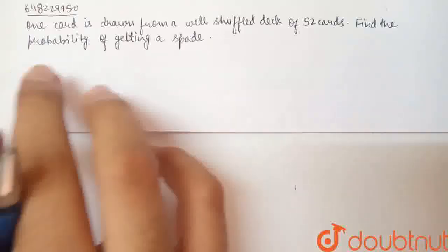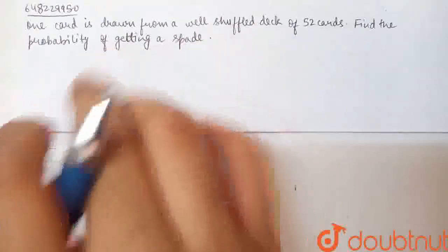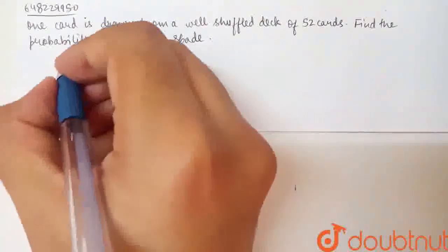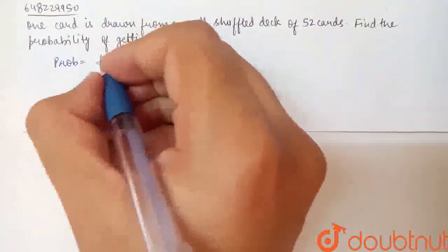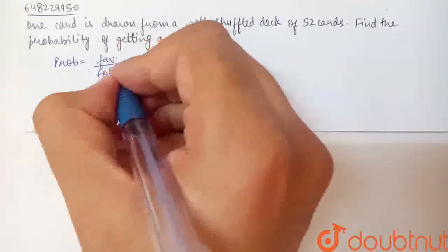This question is: One card is drawn from a well-shuffled deck of 52 cards. Find the probability of getting a spade. So we talk about probability. What is probability? Favorable cases by total cases.